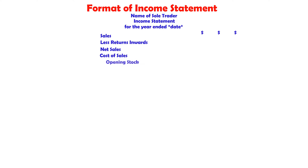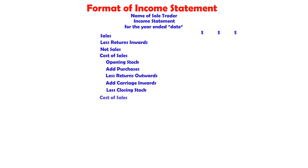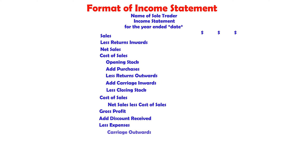Cost of sales: opening stock, add purchases, less returns outwards, add carriage inwards, less closing stock equals cost of sales. Net sales less cost of sales equals gross profit. Add discount received, less expenses — carriage outwards, discount allowed, general expenses — gives total expenses. Gross profit less total expenses equals profit for the year.